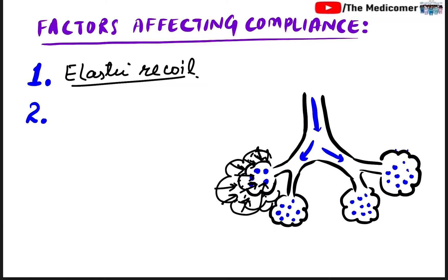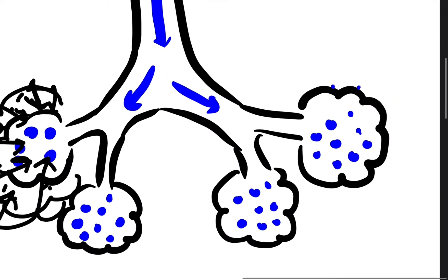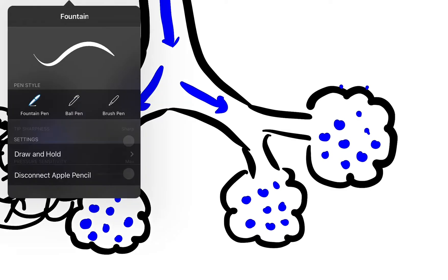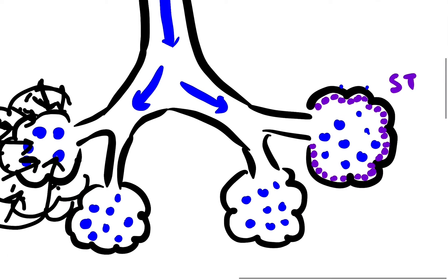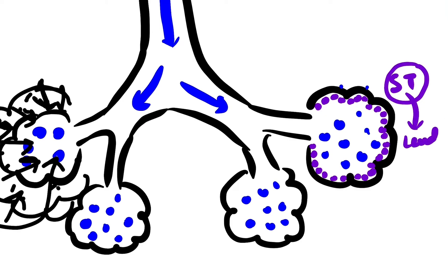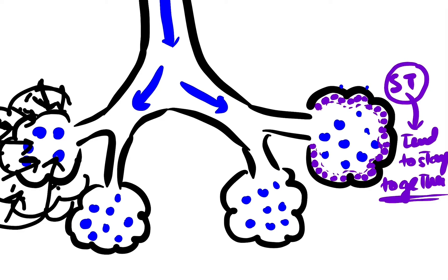The second factor is surface tension. The inner lining of the alveoli is lined with small water molecules that form a continuous membrane-like structure due to the property of surface tension. These water molecules tend to stay together and act like a membrane. Any force that tries to break them apart will be opposed.